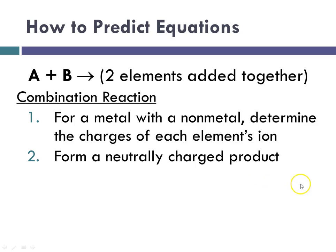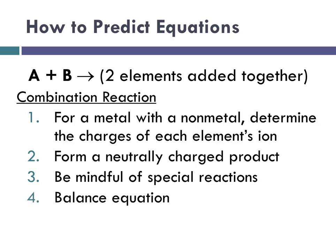In order to then form a neutrally charged product, typically using our criss-cross method again and following the rules for writing binary ionic compounds, where you always write the cation first and then the anion. And then you also have to be mindful of special reactions. Most of the special reactions that we'll talk about, particularly in honors chem, would be covalent compounds. And then finally balance the equation.